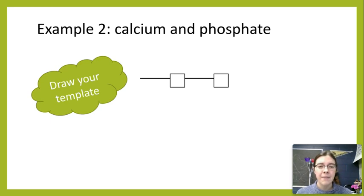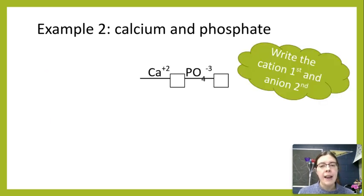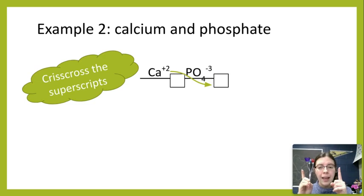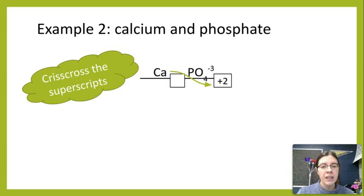The next example, calcium and phosphate. So we have calcium Ca plus two and phosphate, which is PO4 minus three. Again, we're going to take our superscript numbers up top and crisscross them down below. So the two from calcium goes into the last box and the minus three from phosphate goes into the first box.